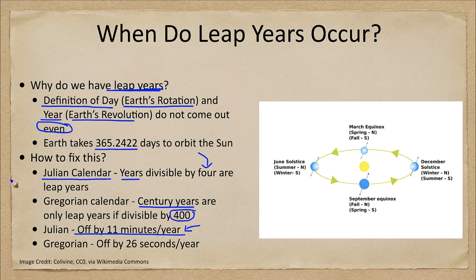Under this rule, years like 1700, 1800, and 1900 were not leap years. The year 2000 was a leap year, but 2100 and 2200 will not be leap years because they are not evenly divisible by 400.